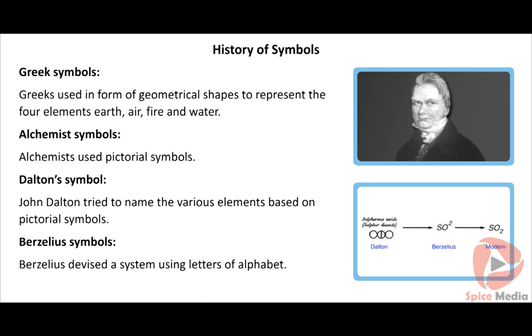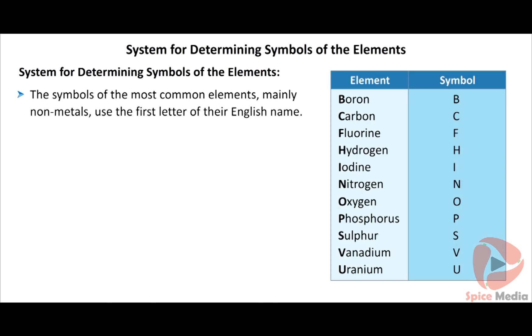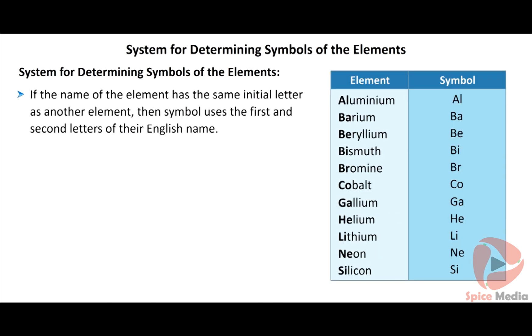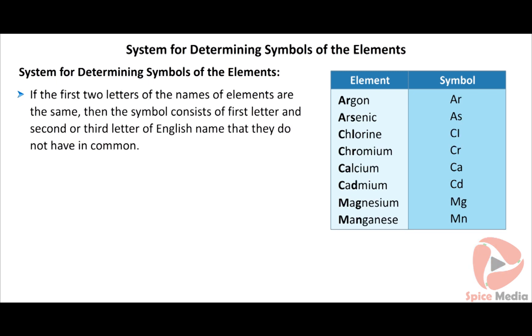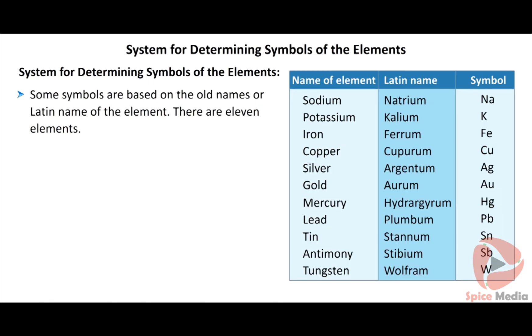System for determining symbols of the elements: The symbols of the most common elements, mainly non-metals, use the first letter of their English name. If the name of the element has the same initial letter as another element, then the symbol uses the first and second letters of their English name. If the first two letters of the names of the elements are the same, then the symbol consists of the first letter and second or third letter of the English name that they do not have in common. Some symbols are based on the old names or Latin names of the elements.